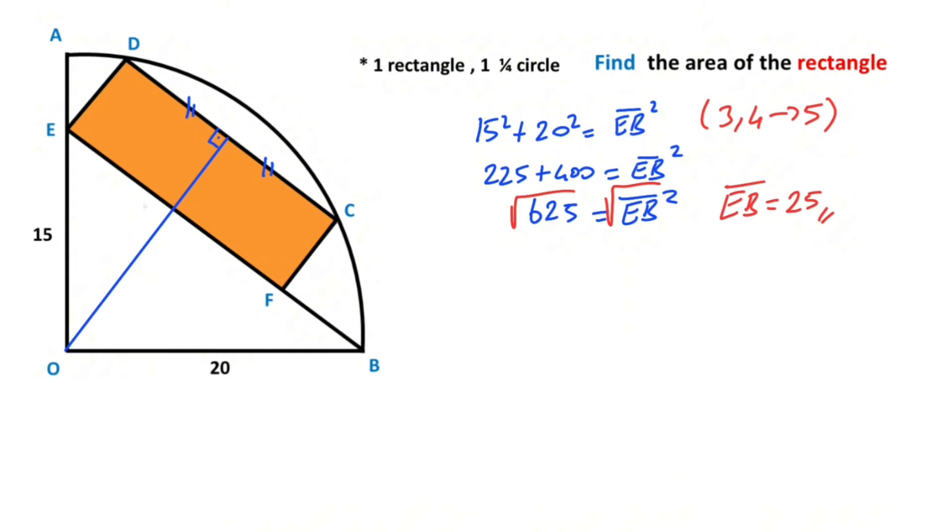And we know that these two lines are parallel because of the rectangle. So here is also 90 degrees. That means these two parts must be equal to each other.